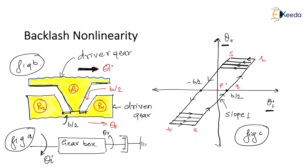So even though input is being given and the driver gear moves in the clockwise direction, there will be no movement in the driven gear (gear B) unless and until gear A moves the distance B/2 and touches tooth B1. This output motion — or rather the absence of output — can be seen in segment PQ of figure C, where no output occurs over the B/2 distance from the origin.